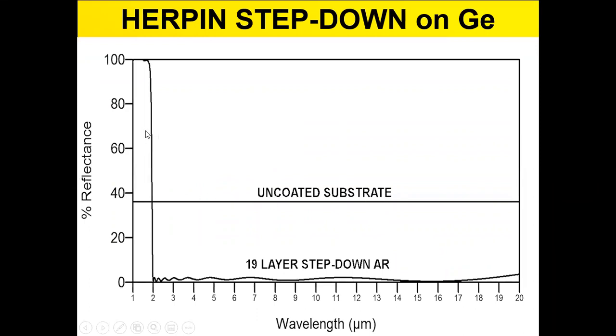When I look at the spectrum created, I've got a very broad band from 2 to 20 microns in this case, which is down in the 1% region. So it's a broadband AR coating, whereas the uncoated substrate might reflect 36%.